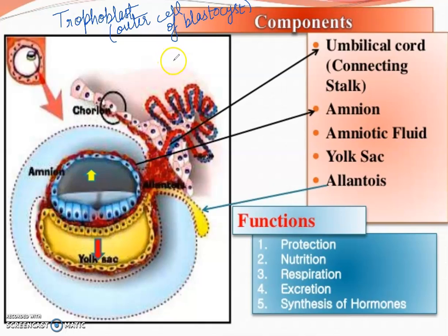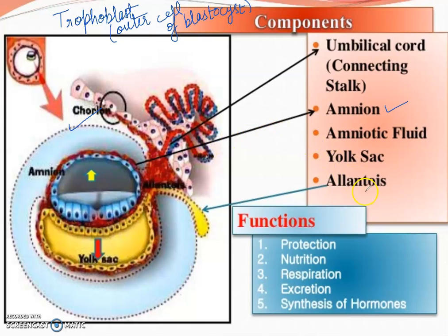This is extra-embryonic and fetal membrane. Students, here you have mainly four membranes: amnion, chorion, allantois, and yolk sac. These are the four extra-embryonic membranes.